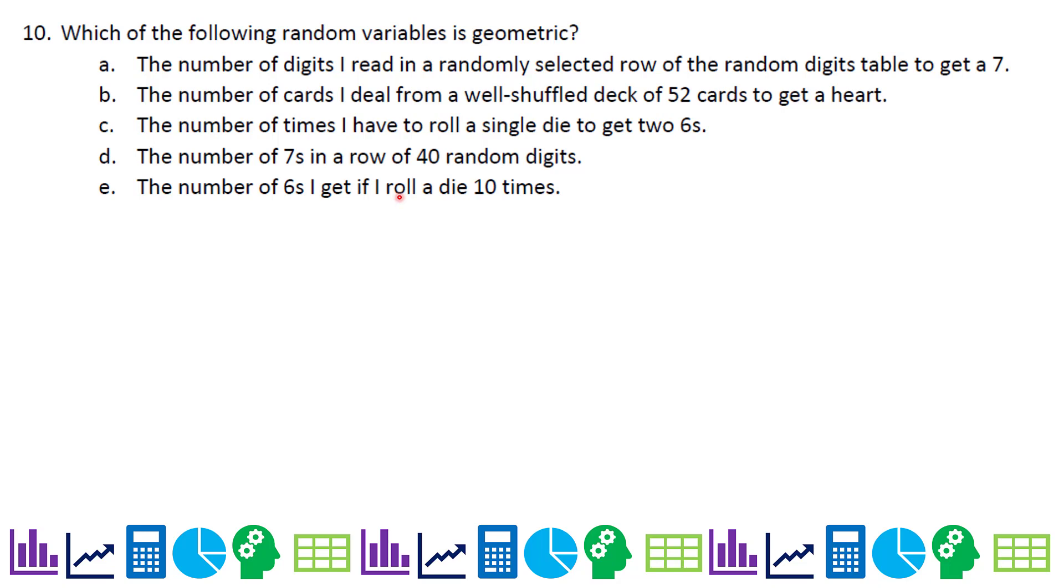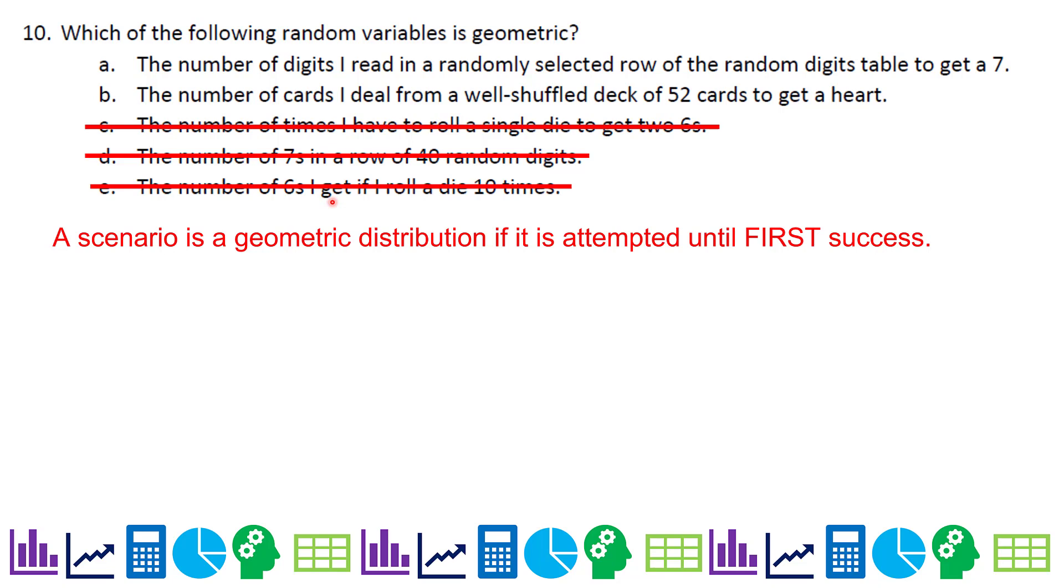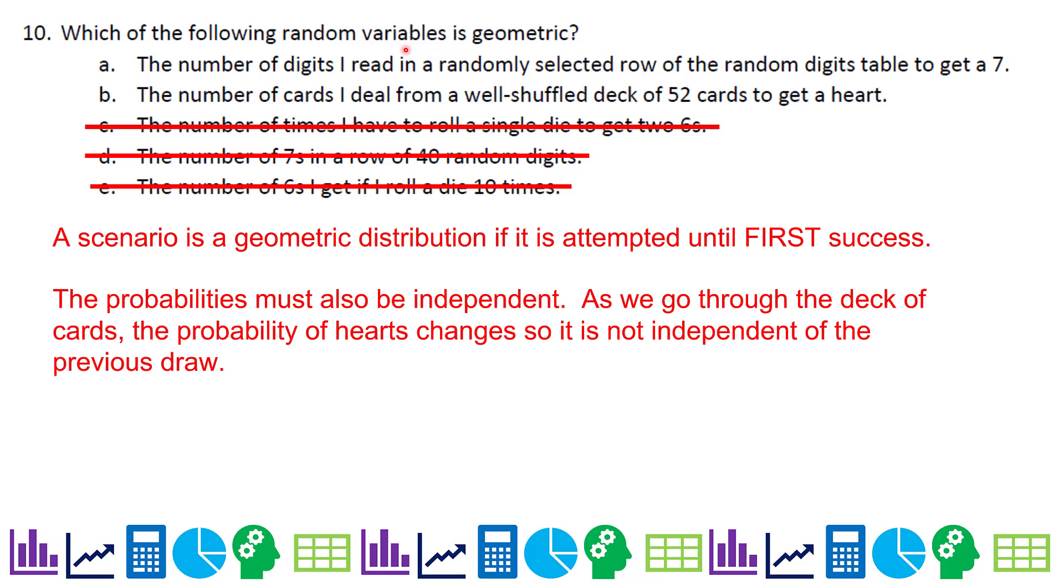Number 10, which of the following random variables is geometric? Geometric is attempted until your first success. Here, I'm getting two sixes, I've got the number sevens, the number of sixes. These are not first successes. So you can cross those off. The number of digits I read in a randomly selected row of the random digits table to get a seven, or the number of cards I deal from a well shuffled deck of 52 cards to get a heart. These are both binomial, because you either get a seven or you don't, you get a heart or you don't. But the second scenario, because it said a well shuffled deck of 52 cards, that's not as huge a number of cards, so that is going to change as we draw cards out of the deck. So that's not independent. The answer is A.